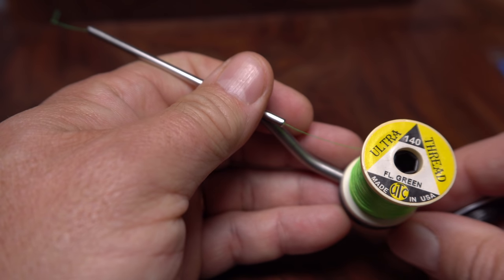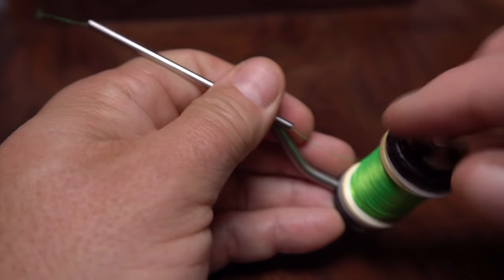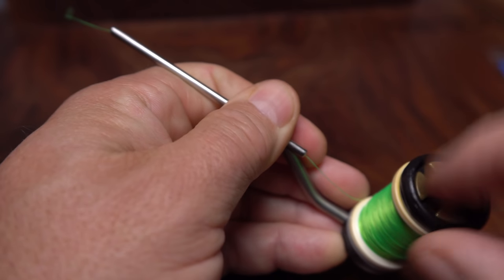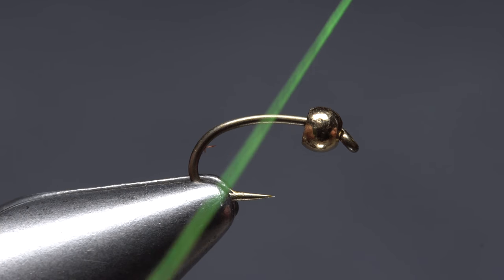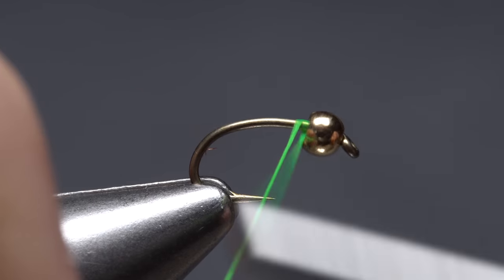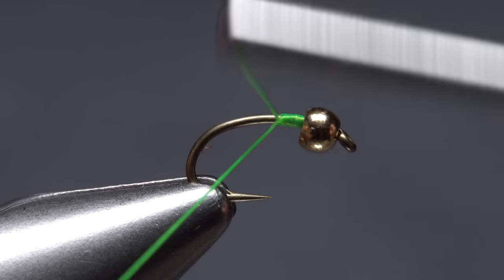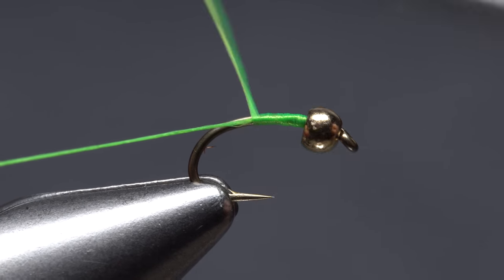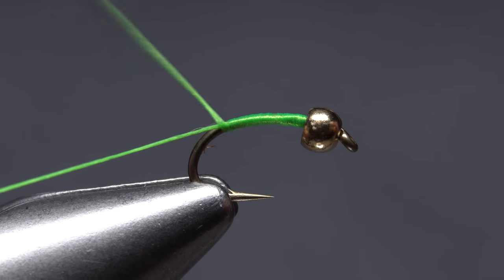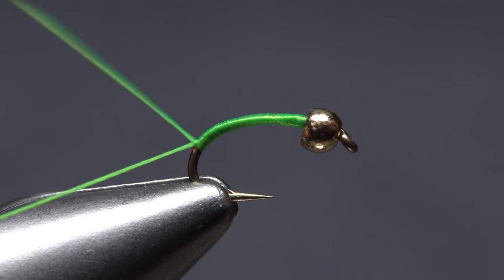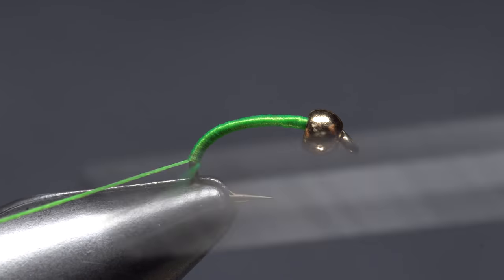Two different threads are used for the Danger Baby. The first is fluorescent green 140 denier. Leave an extra long tag, say 2 to 3 inches, then get your thread started on the hook shank immediately behind the bead and continue taking rearward wraps down the shank. Take wraps well down into the hook bend, almost to the jaws of your tying vise.